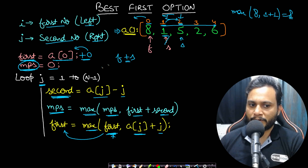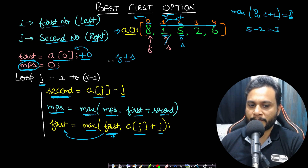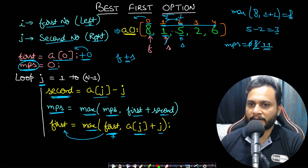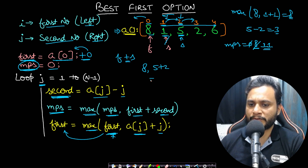At j=2: second = 5 - 2 = 3. maxPairSum = max(8, 8+3) = 11 — updated to 11. Then we check first: max(8, 5+2) = max(8, 7) = 8, no update. At j=3: second = 2 - 3 = -1. maxPairSum = max(11, 8+(-1)) = 11, no update. Check first: max(8, 2+3) = max(8, 5) = 8, no update.